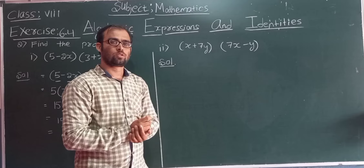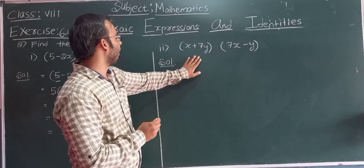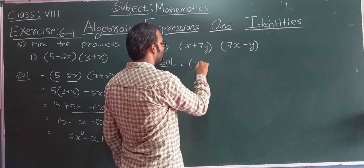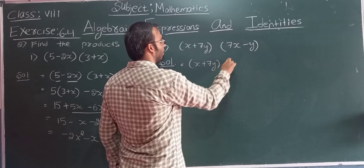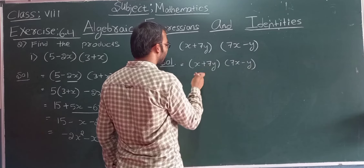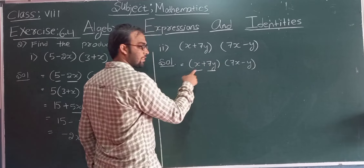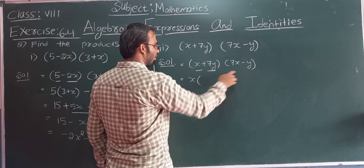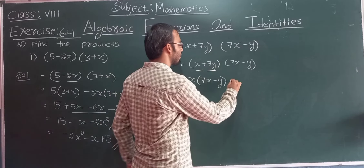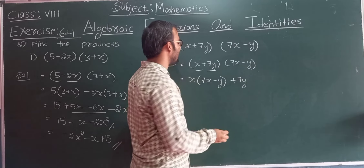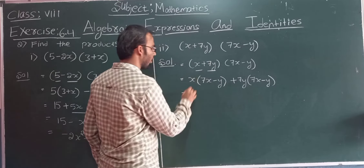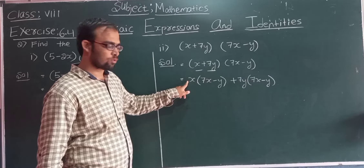Now for the second question: (x plus 7y) into (7x minus y). Write the first expression x plus 7y into (7x minus y). I will keep (7x minus y) as it is and divide (x plus 7y) into two parts: the first part is x and the second part is 7y. Write x into (7x minus y), then plus 7y into (7x minus y).